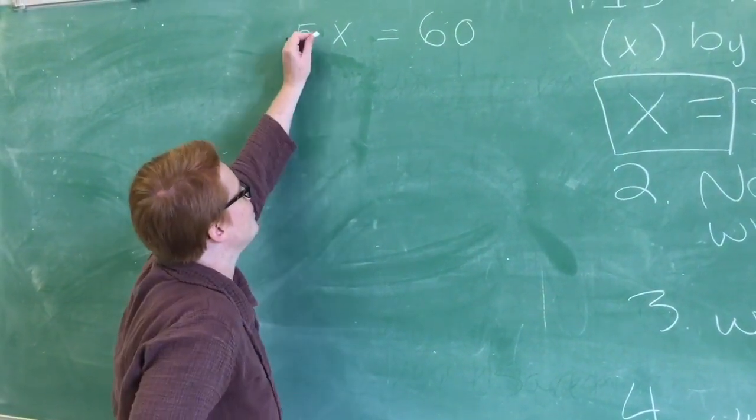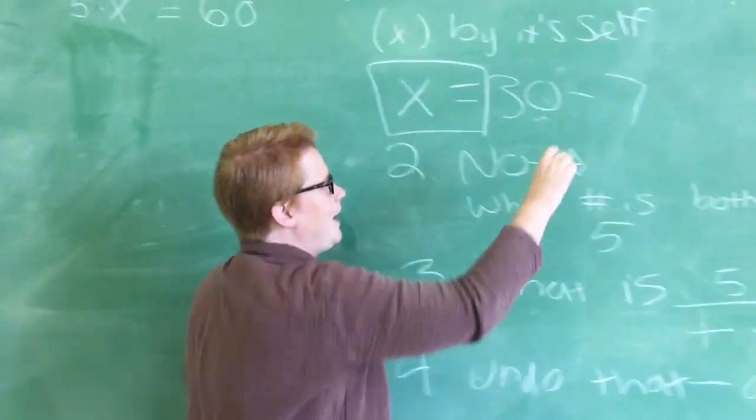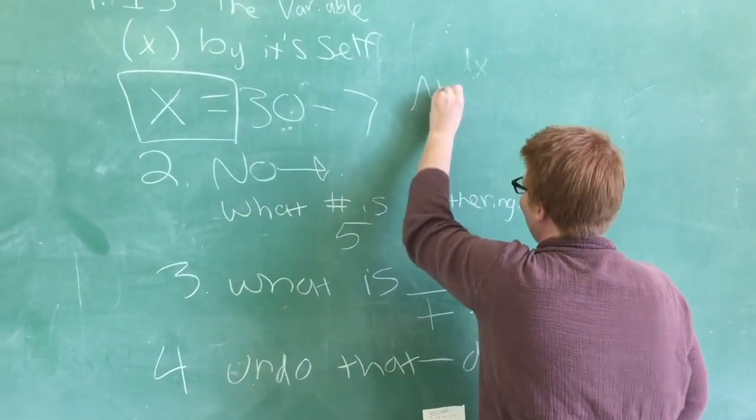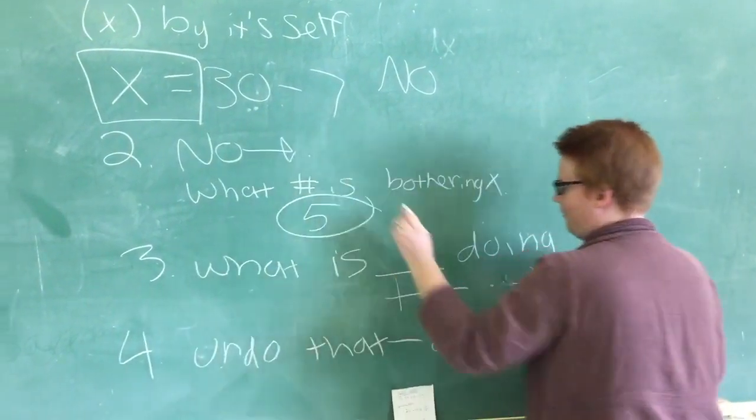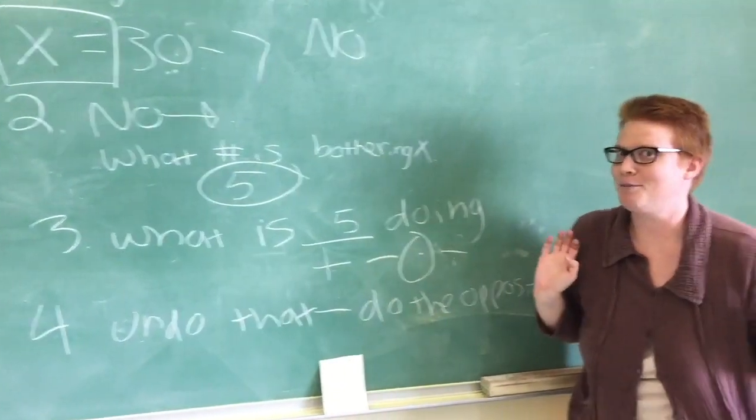There's like this little invisible dot here. All right, x is being multiplied. Okay, is x by itself? No. What number is bothering x? 5. What's 5 doing? It's being multiplied.